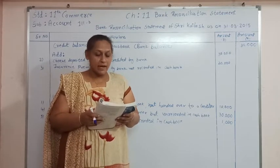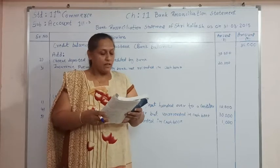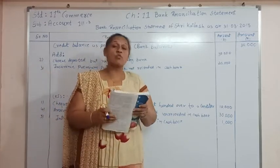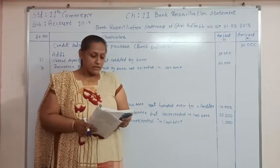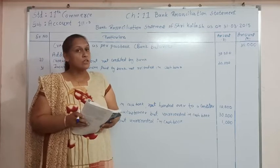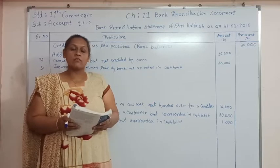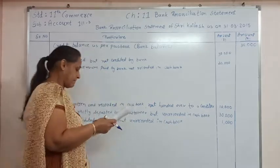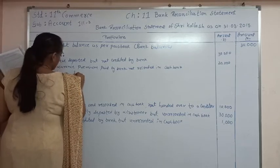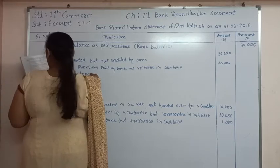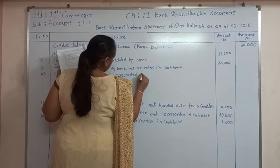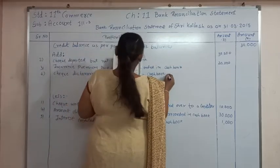Transaction number 6: a check of rupees 60,000 which was deposited in the bank is dishonored, and this information was received on 2/4/15. When the check is dishonored, it was already recorded in the cashbook but it is not credited in the passbook. So to make the amounts equal we have to add it in the passbook. Entry in BRS: check dishonored but unrecorded in cashbook — rupees 60,000.